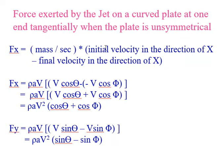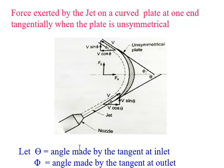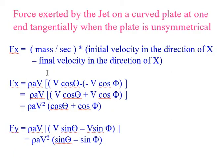The force in the x-direction, Fx, equals mass per second into initial velocity in the x-direction minus final velocity in the x-direction. From the figure, the initial velocity in the x-direction is V cos theta, and the final velocity is minus V cos phi (opposite direction). Therefore, Fx = rho A V (V cos theta minus of minus V cos phi) = rho A V² (cos theta plus cos phi). This is the force exerted in the x-direction.